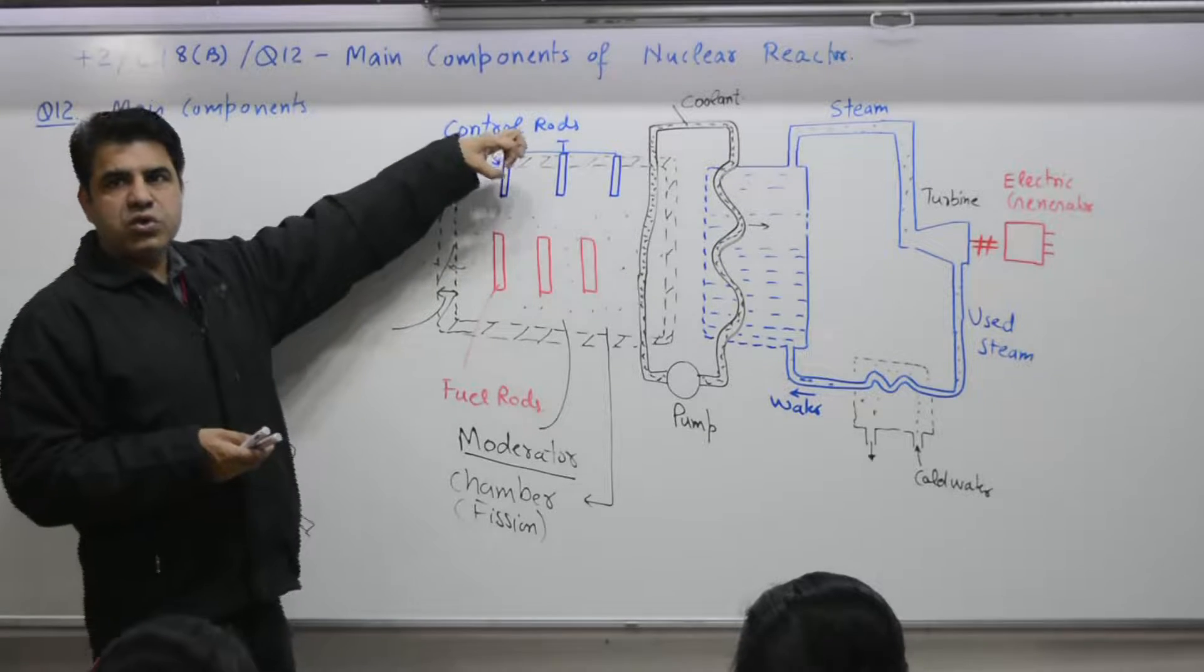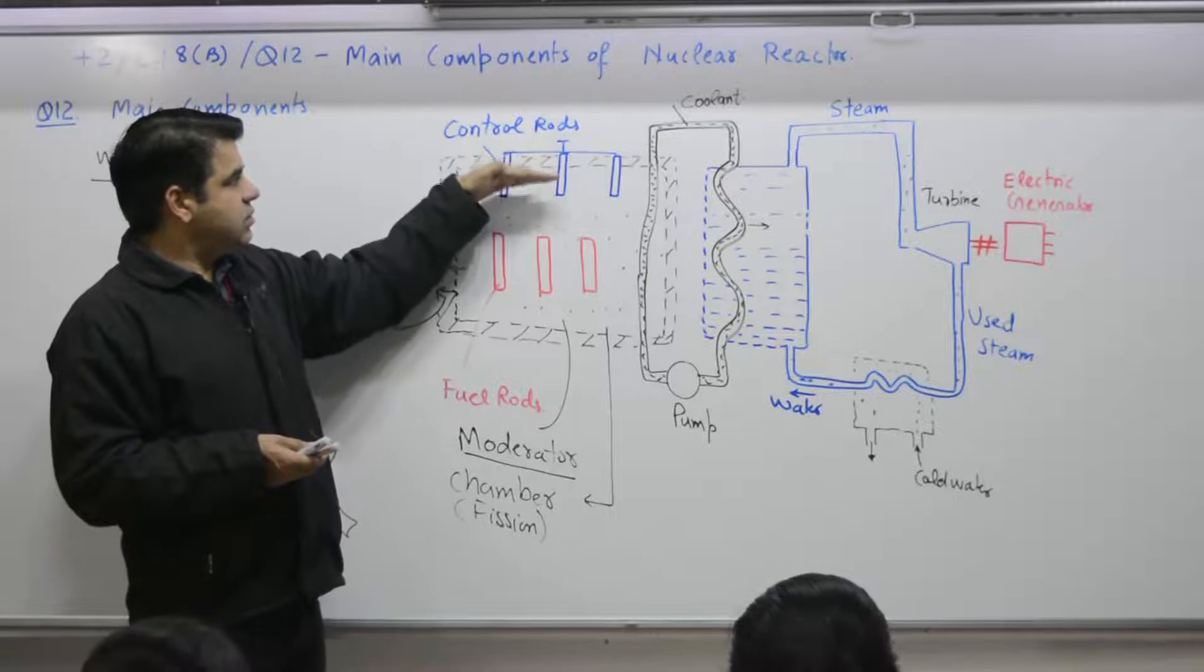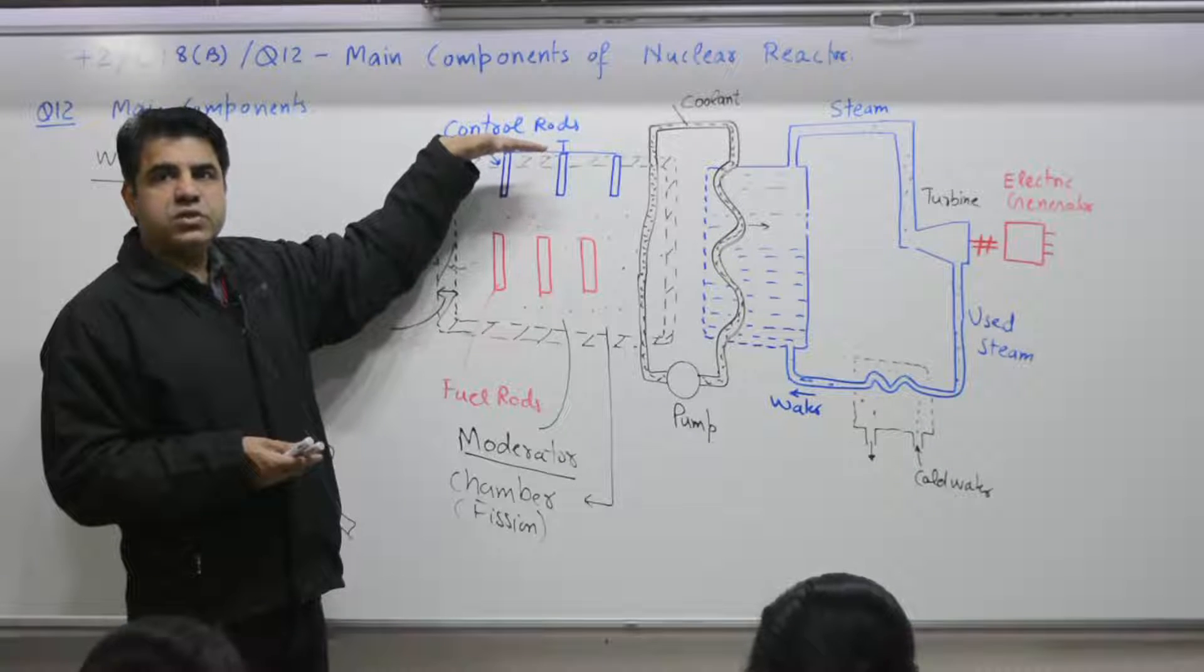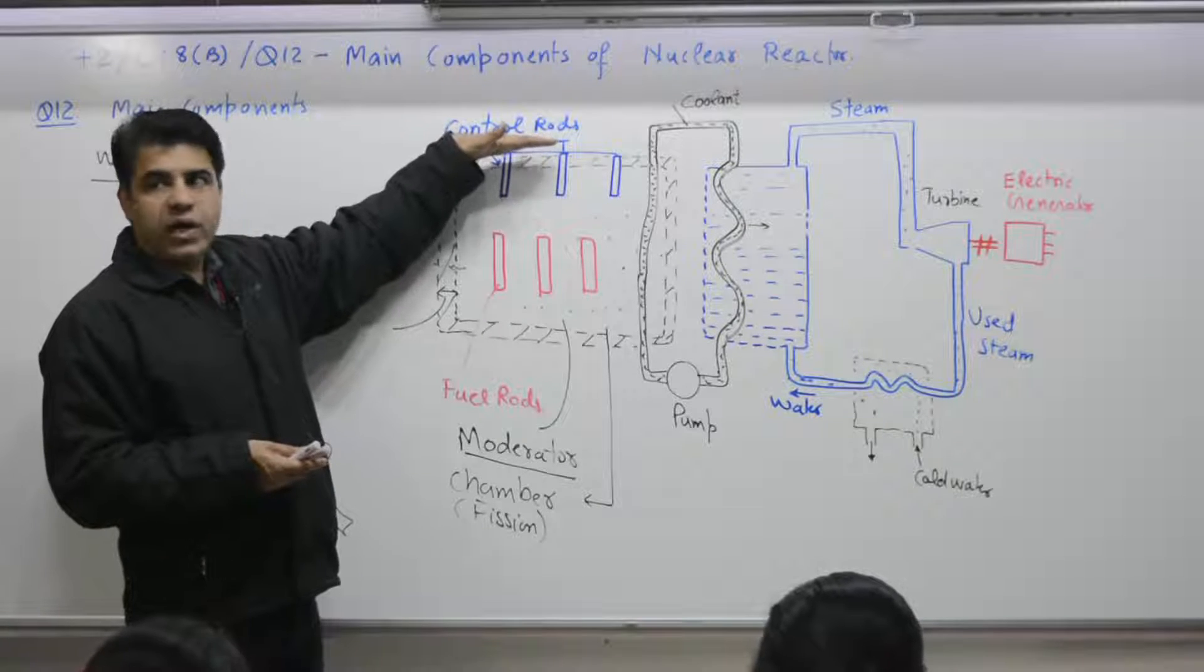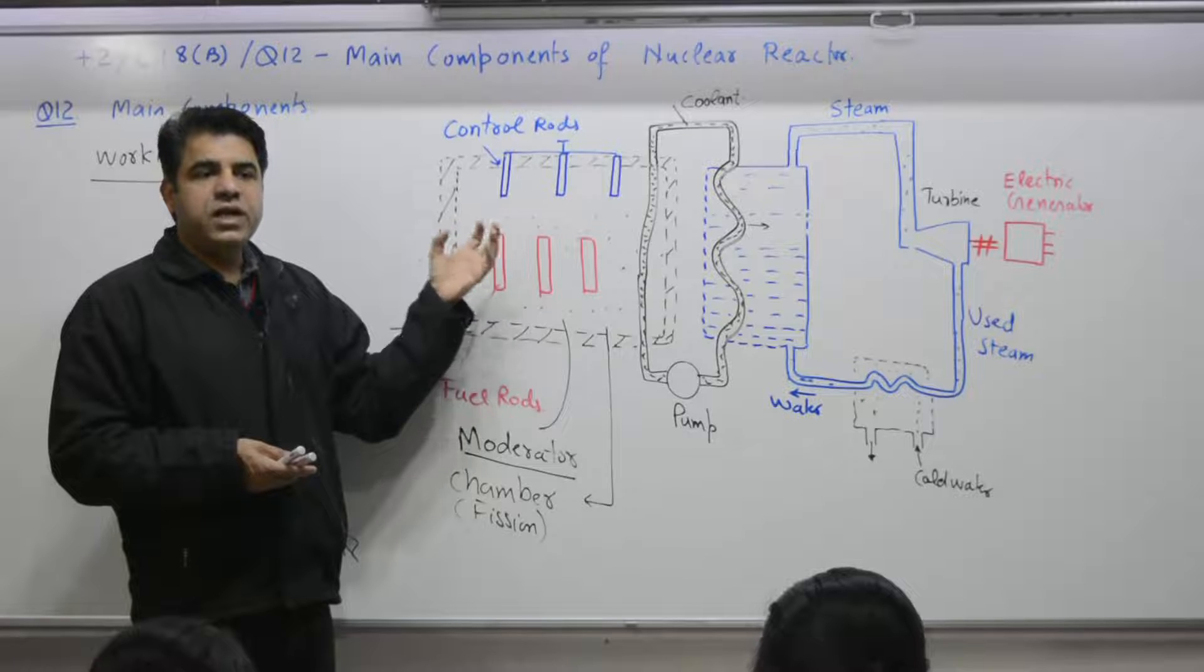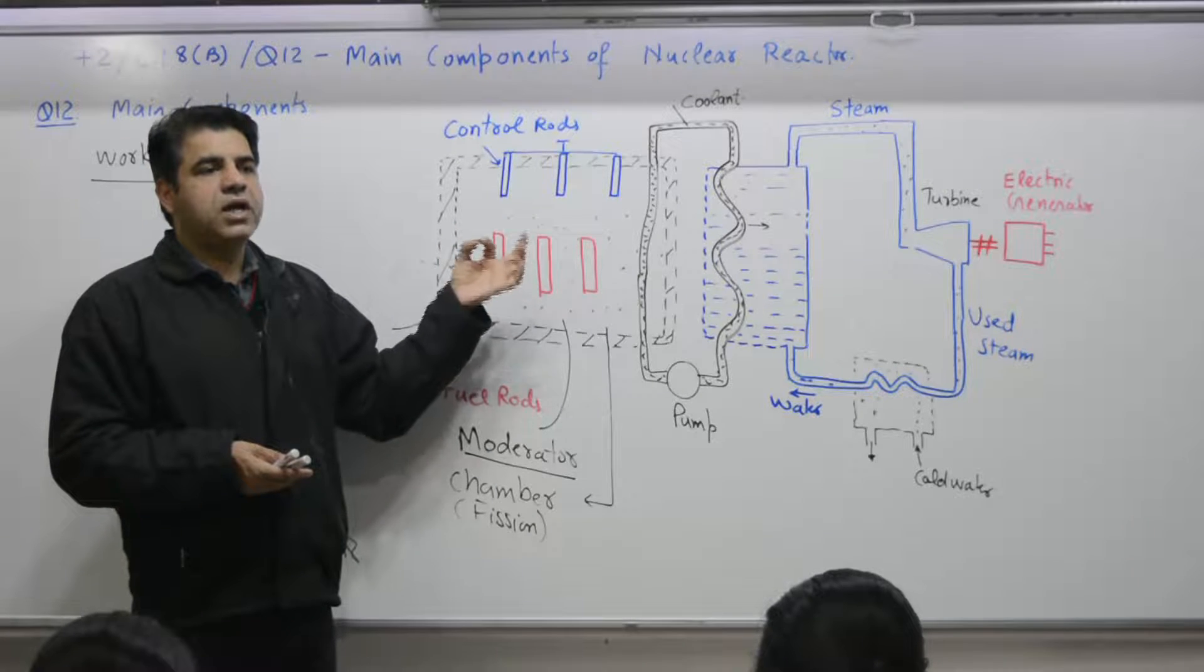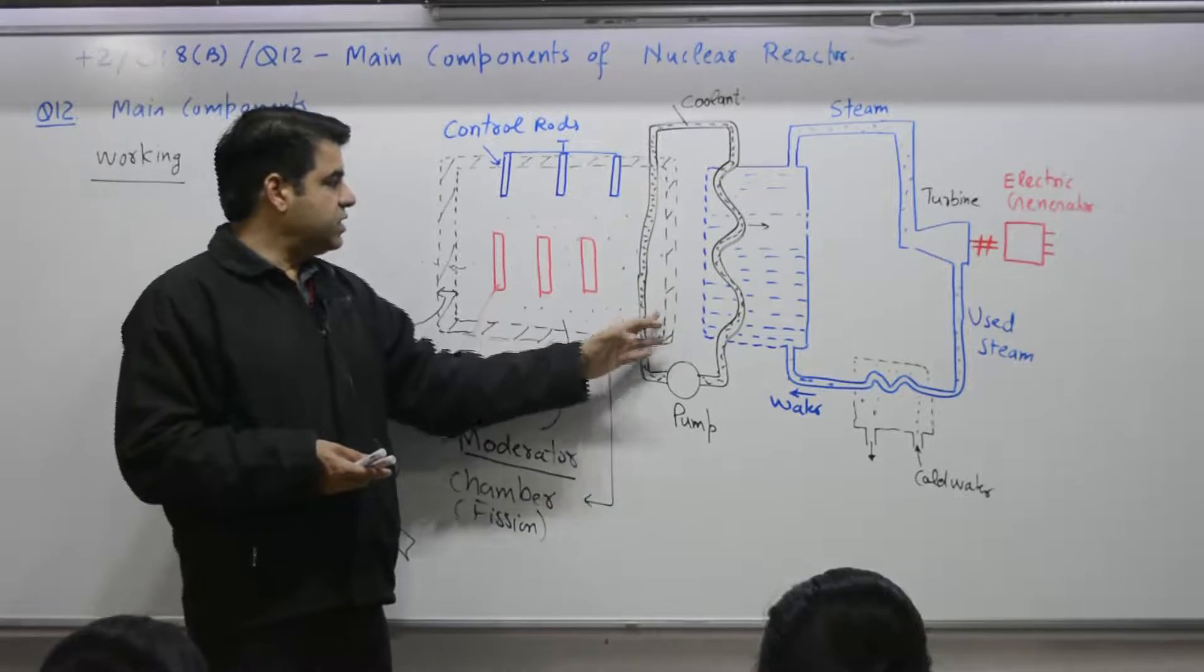What is the initial position of control roads? They are out. So that the reaction can start. So you can position the control roads to maintain a reproduction factor. We will discuss K is equal to 1. So that number of neutrons produced is equal to number of neutrons lost. That factor should remain 1. So this fission process takes place, fission reaction from material uranium. Fission of uranium will take place. Each reaction gives you approximately 200 mega electron volt of energy.